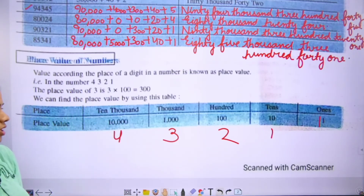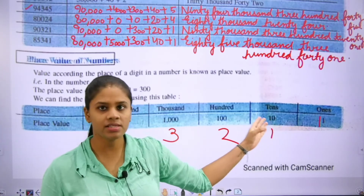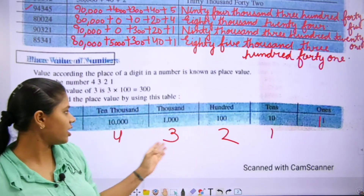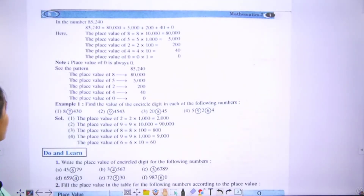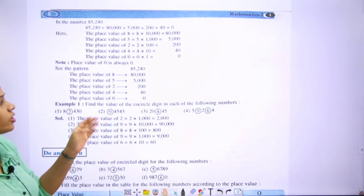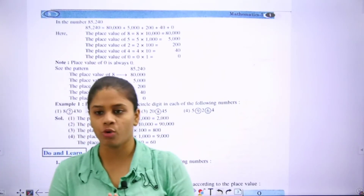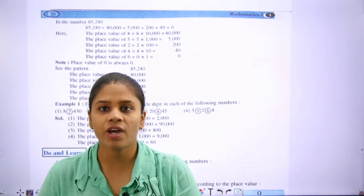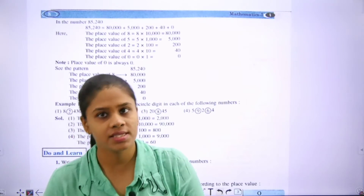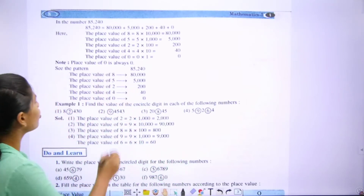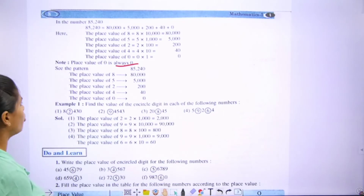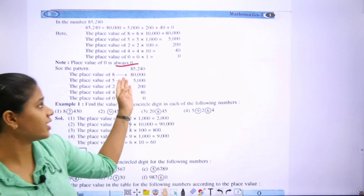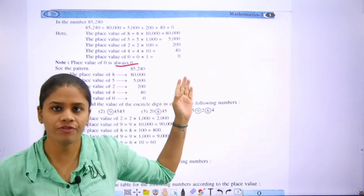Understand, students. Ones, tens, hundred, thousand, ten thousand. Move to the next one. Now, place value of zero is always zero. Students, one more important thing — the place value of zero is always zero. Let's start. This is 85,240.